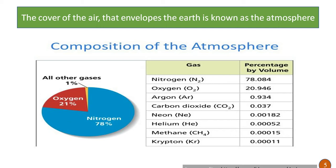The first component is the atmosphere. The cover of air that envelopes the earth is known as the atmosphere — or in simple words, the blanket of air surrounding the earth. We can see the composition of the atmosphere: roughly 78% nitrogen, 21% oxygen, and all other trace gases make up 1%, as a percentage by volume.